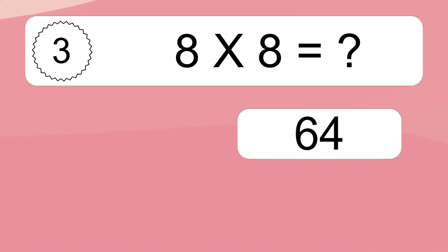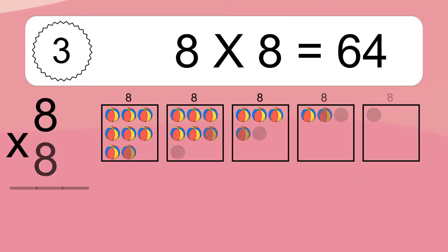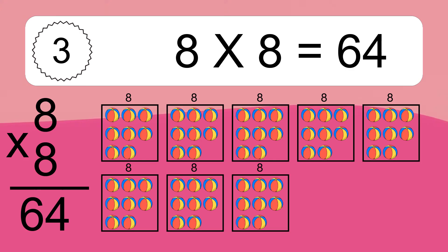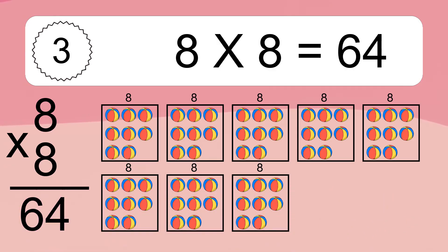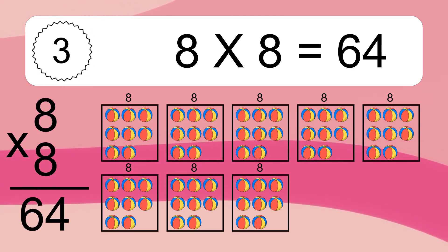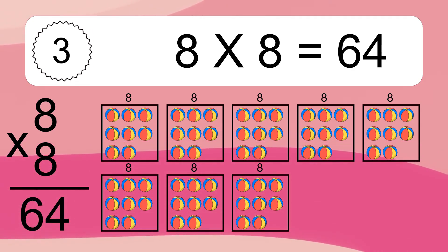8 times 8 equals what? 8 times 8 equals 64. We have 8 boxes, and each box has 8 colorful balls inside. If you count all the balls in all the boxes together, you will have 8 times 8 balls. This equals 64 balls.